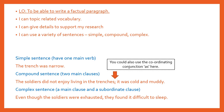A compound sentence has two main clauses. For example: 'The soldiers did not enjoy living in the trenches; it was cold and muddy.' I'll give you a little hint there — you could put 'as' instead of the semicolon. A complex sentence has a main clause and a subordinate clause. For example: 'Even though the soldiers were exhausted, they found it difficult to sleep.'